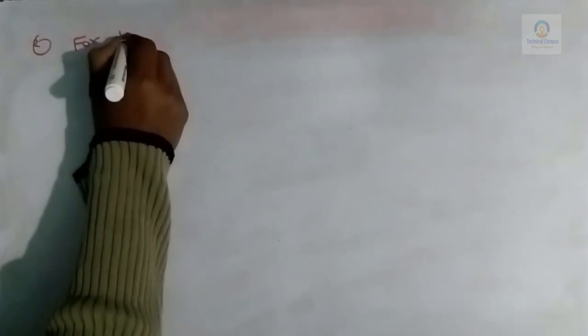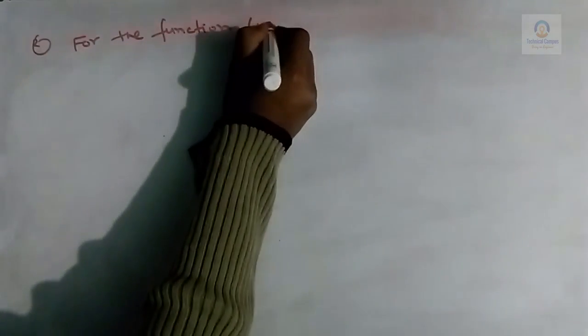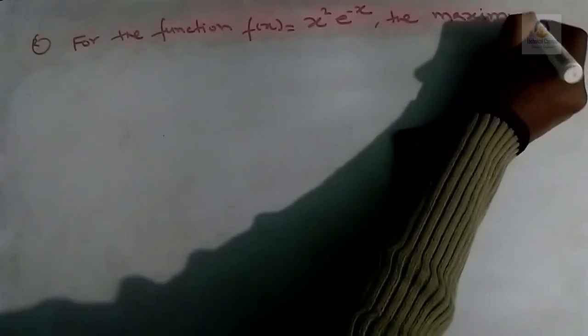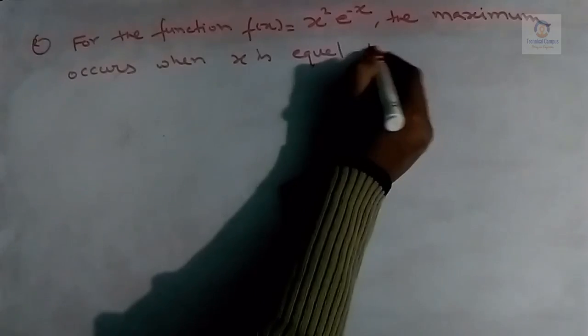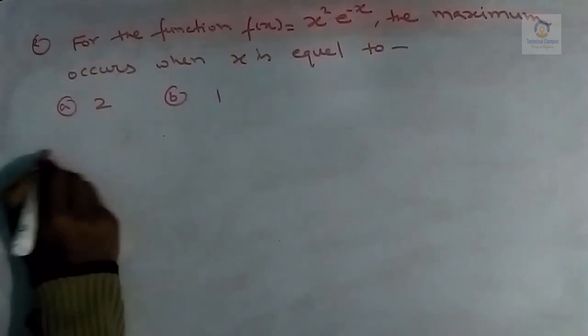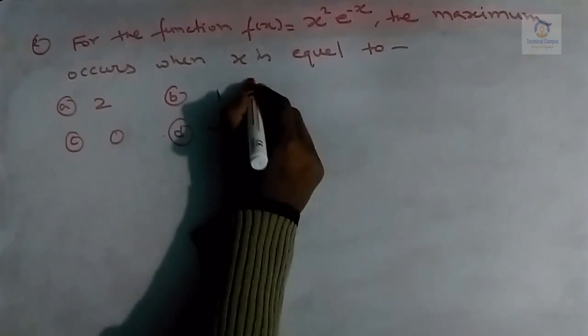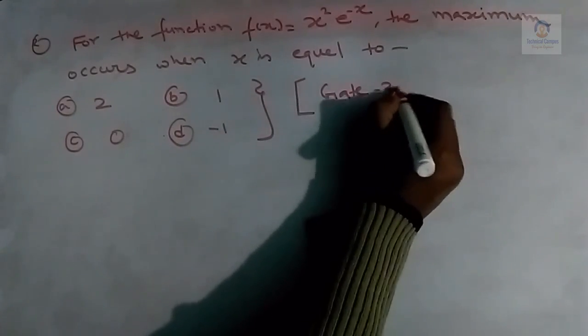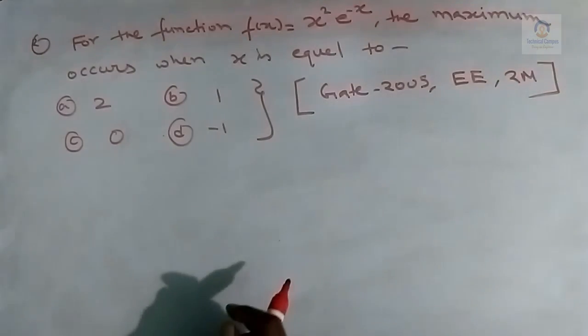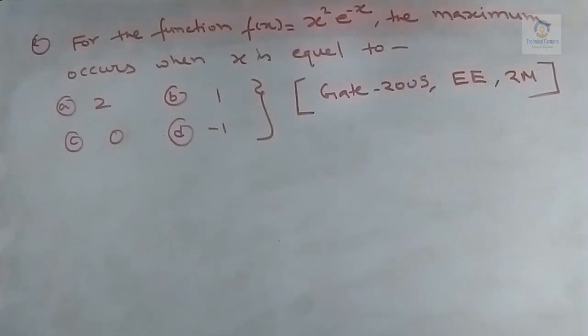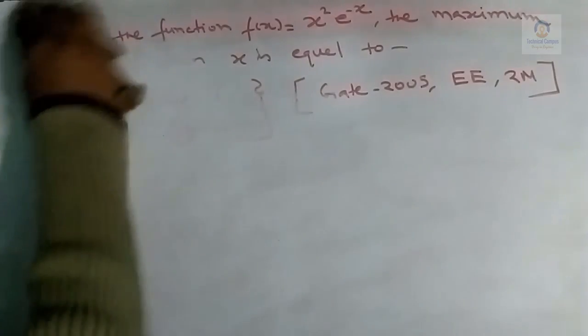Let us take question number two. The function is f(x) = x²·e^(-x). We have to find the value of x at which the maximum occurs. The options are: (A) 2, (B) 1, (C) 0, (D) -1. This question came in GATE 2005, Electrical Engineering, for two marks. We need to find the point of maxima for this function.